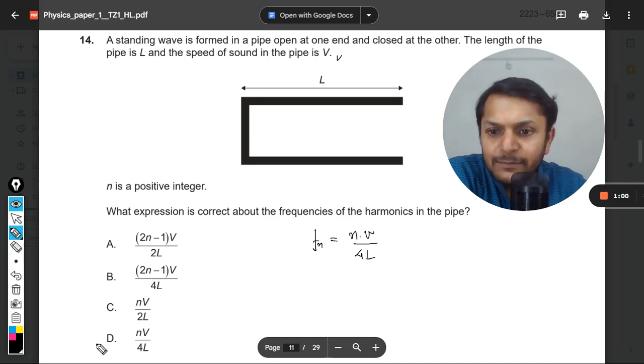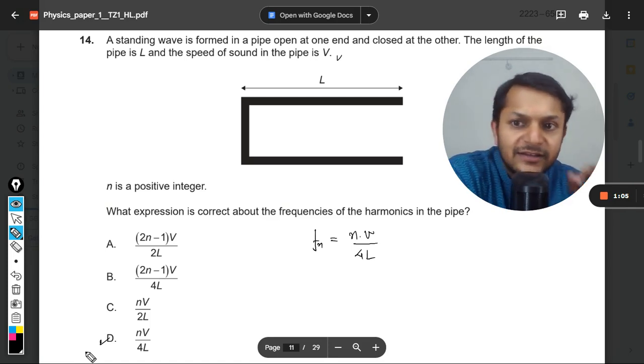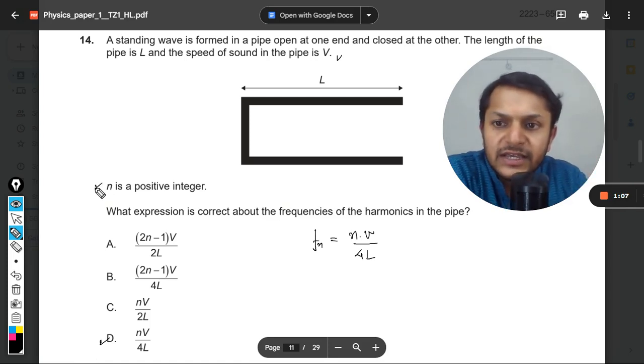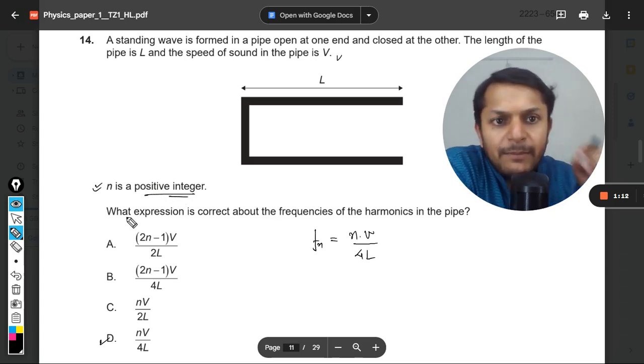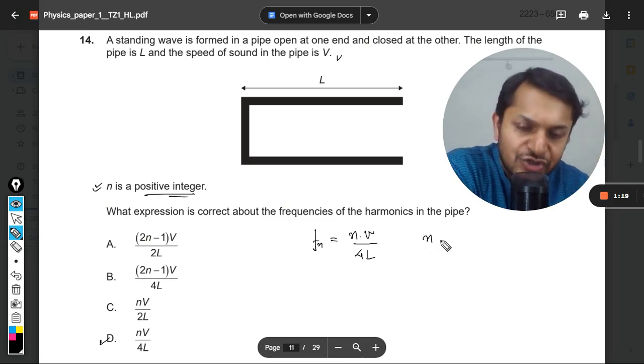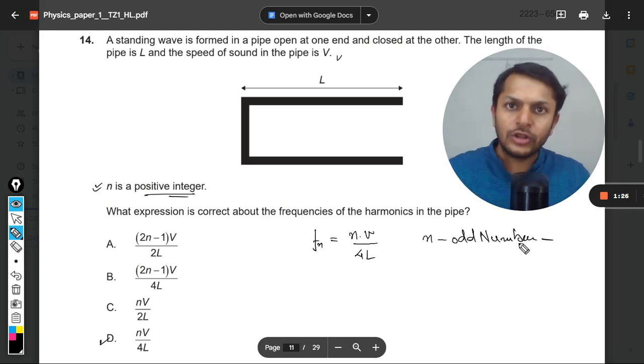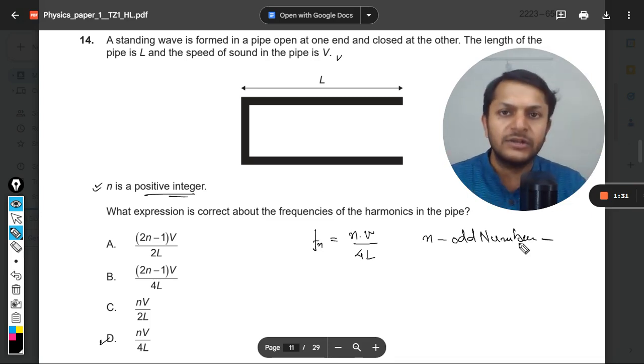So it will be highly tempting to just tick answer D in the first place, but that is not the correct answer because here is the problem. It says that N is a positive integer. If you remember this formula N times V divided by 4L, you must also remember that here N is actually an odd number. It is not all natural numbers. It is not all positive integers. It is only the odd numbers because even harmonics are not present.